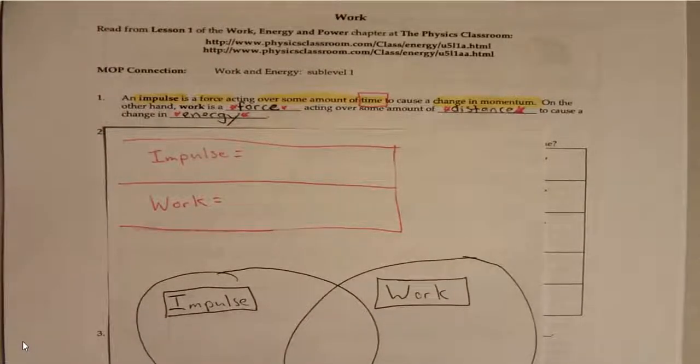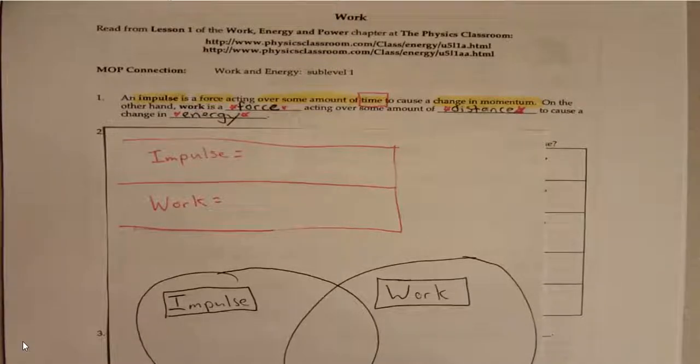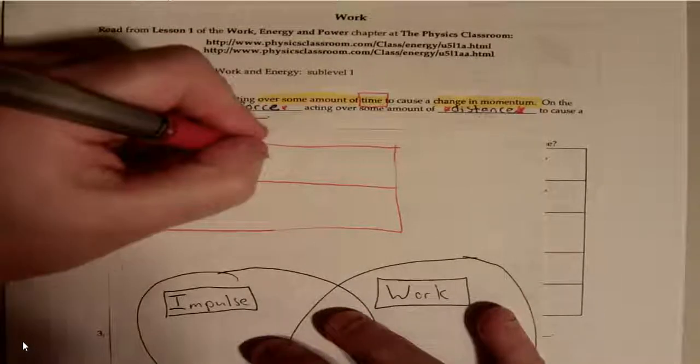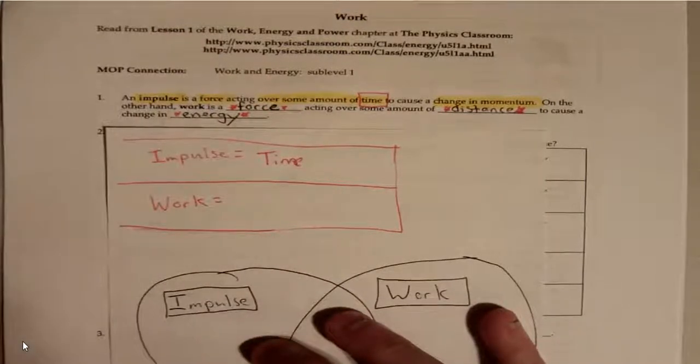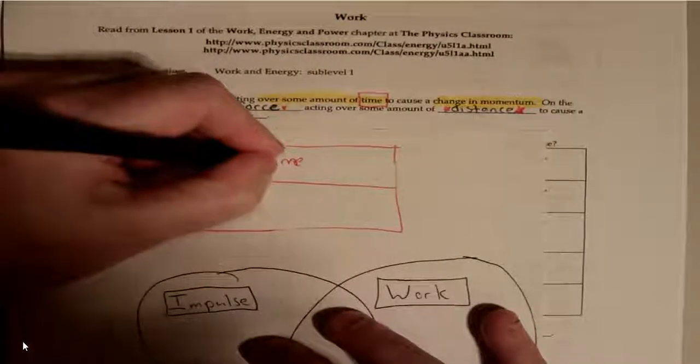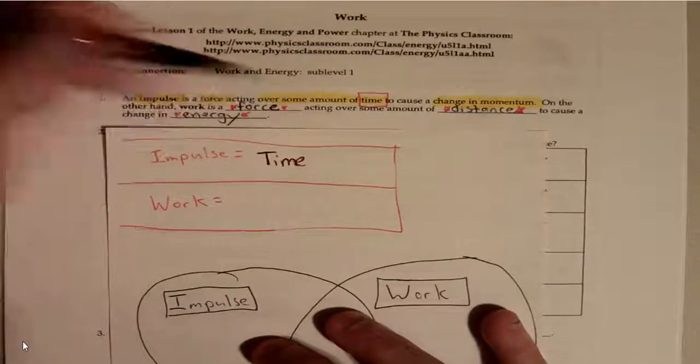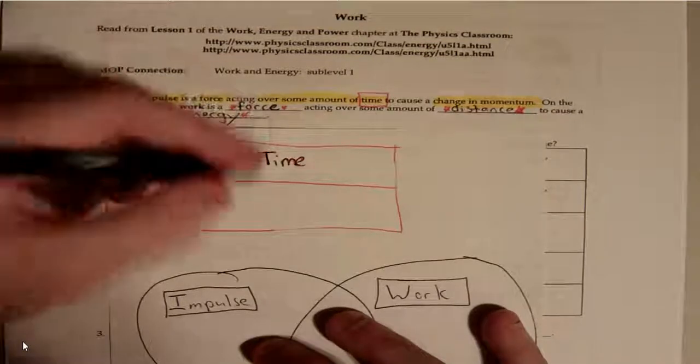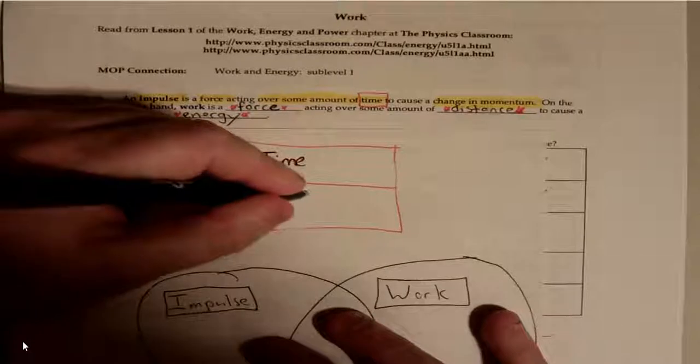Let's talk about this. Let's break this down. The number one most important thing here - we know they're both forces, right? So impulse really focuses on time. Impulse focuses on, it goes over an amount of time, whereas work acts over some amount of distance.